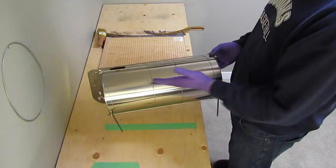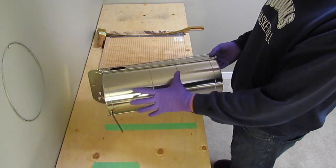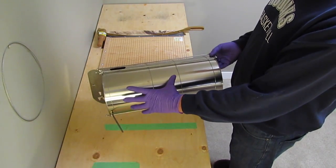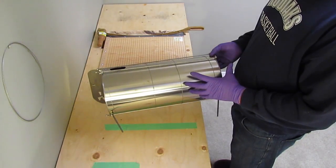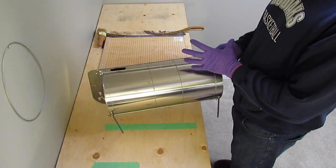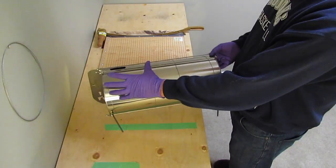What a stove baffle does is it deflects that heat, that smoke, that gas, the unburned gas, and it's going to push all that gas to the back of the stove, it's going to move up to the top, it's going to move back, and it's going to go out the pipe.